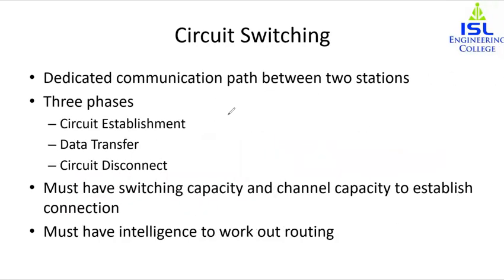In circuit switching, the path is a connected sequence of links between network nodes. On each physical link, a logical channel is dedicated to the connection. Communication via circuit switching has three phases: first, circuit establishment; second, data transfer; third, circuit disconnection. Before any signals can be transmitted, an end-to-end circuit must be established.